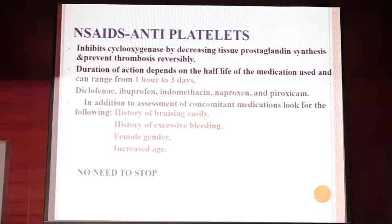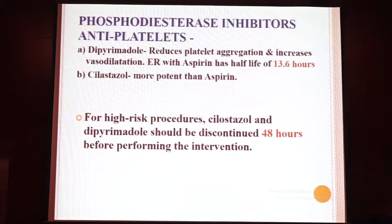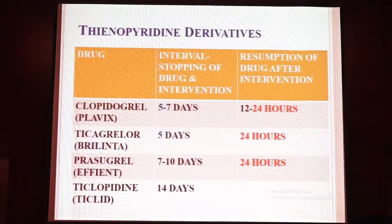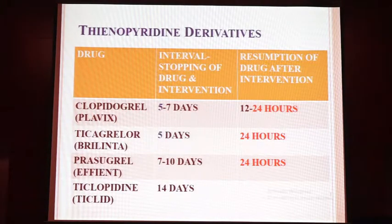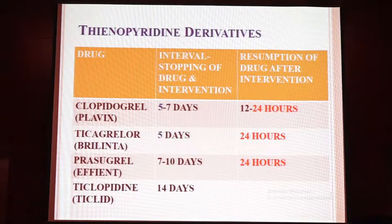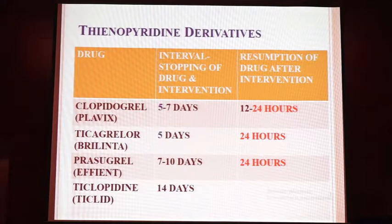NSAIDs: there is no need to stop these drugs unless the patient has a history of easy bruising, excessive bleeding, is female, or is elderly. Phosphodiesterase inhibitors should be discontinued at least 48 hours before the intervention. Thienopyridine derivatives: clopidogrel (Plavix) should be stopped for 5 to 7 days and can be resumed within 12 to 24 hours. Ticagrelor (Brilinta) should be stopped for 5 days and resumed after 24 hours. Prasugrel (Effient) should be stopped 7 to 10 days and resumed after 24 hours.